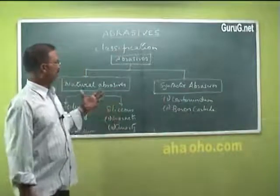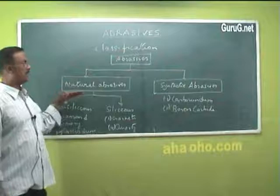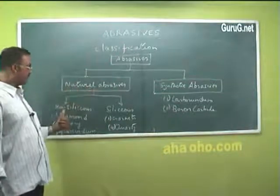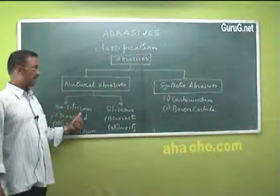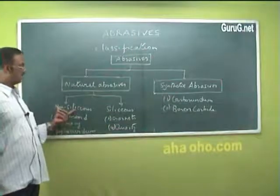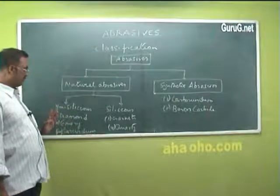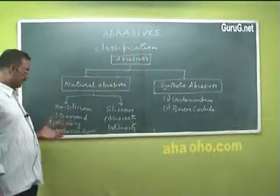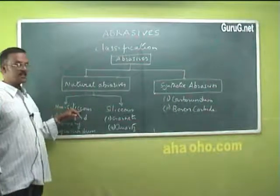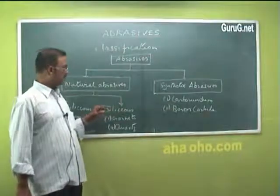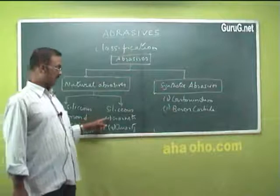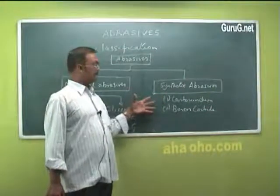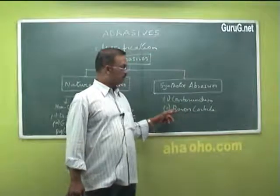Abrasives are either man-made or they occur in nature. Naturally occurring abrasives are known as natural abrasives, and they can be further classified into non-siliceous and siliceous abrasives. Non-siliceous abrasives do not contain silicon — examples are diamond, emery, and corundum. Siliceous abrasives include garnets and quartz. The next class are synthetic abrasives, which are man-made — examples include carborundum and boron carbide.